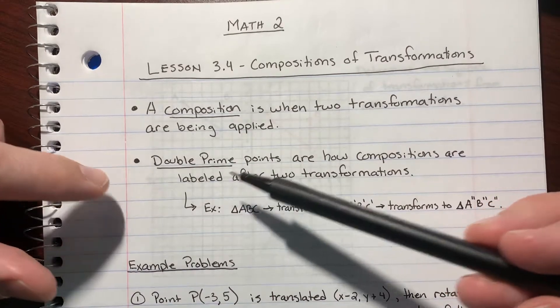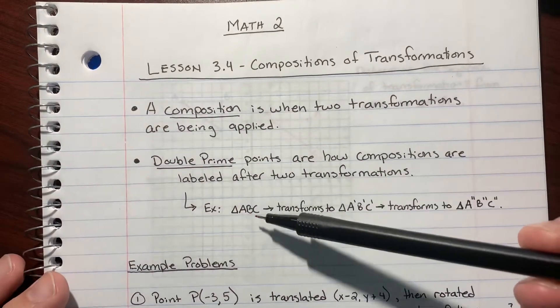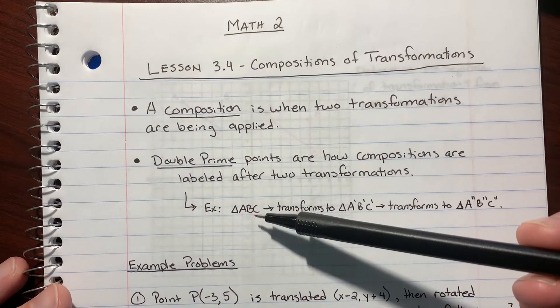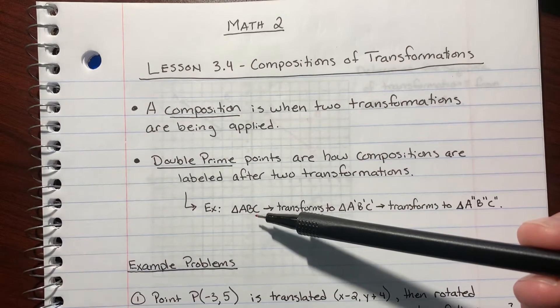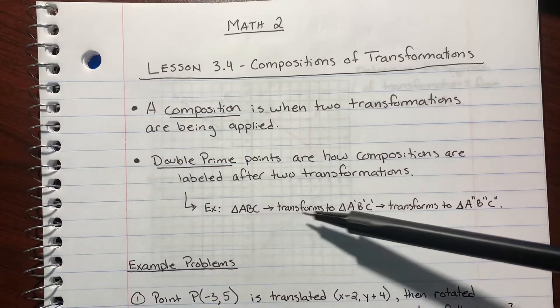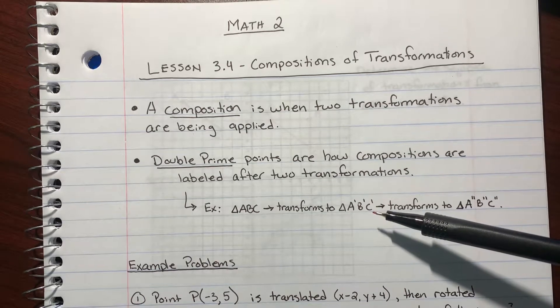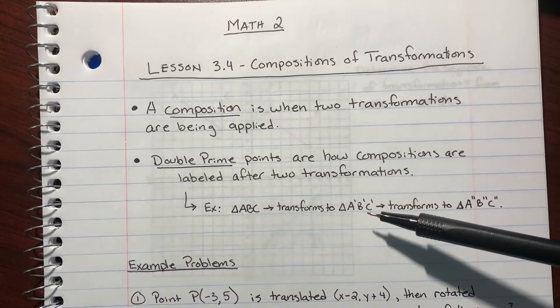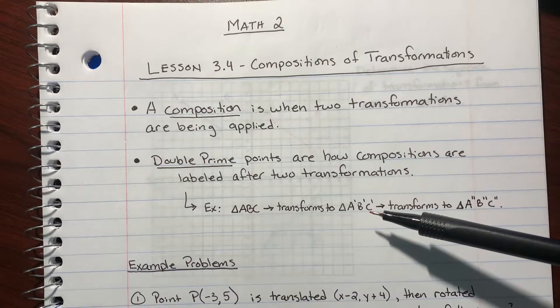Double prime. Well, that's when you take the original image or the pre-image, you apply your first transformation. That's when it becomes the image, which uses the prime points: Triangle A prime, B prime, C prime.